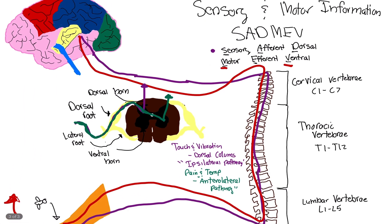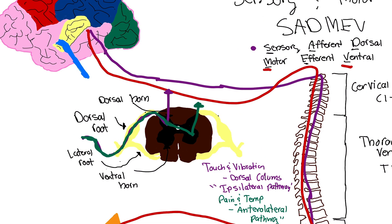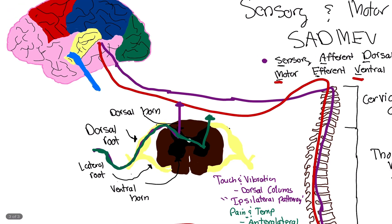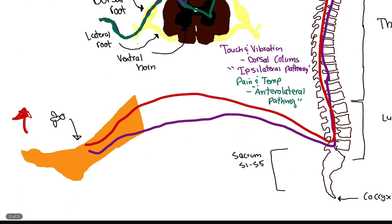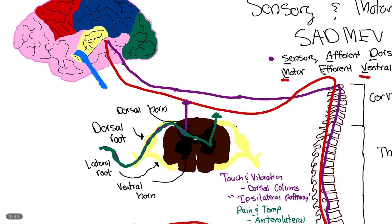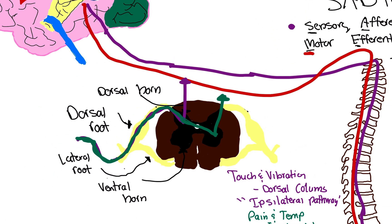Honestly, I want to be really honest with you — this part right here is one of my least favorite things in physiology. I love everything else: I love the sensory-motor stuff, I love the brain. But the actual anatomy of the spinal cord vertebrae — it's annoying, but hopefully this makes sense.